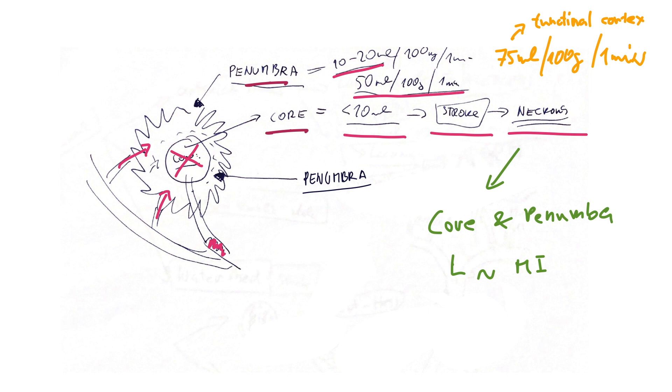When you reperfuse and do angioplasty, you're hoping that the muscle cells which are ischemic but not dead are going to survive. You try to save as much of the cells as possible.